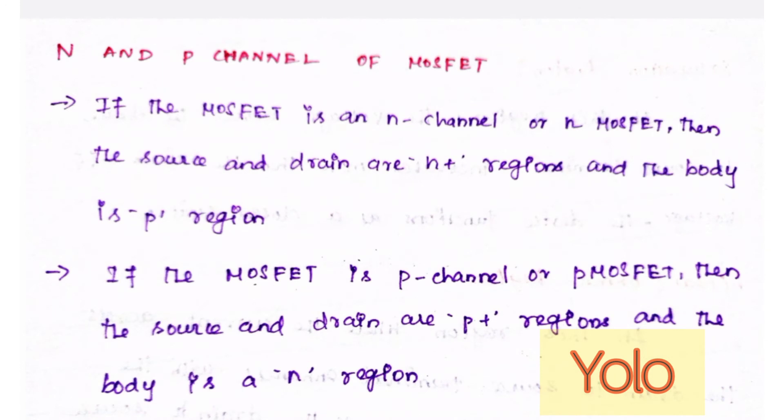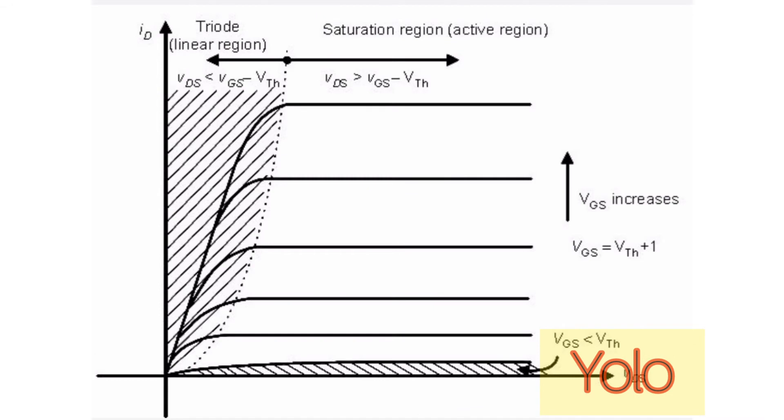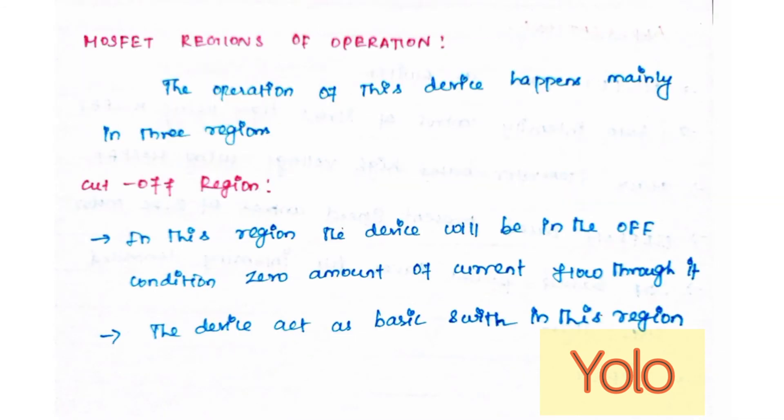N and P channel MOSFET: If the MOSFET is an n-channel or n-MOSFET, then the source and drain are n-plus regions and the body is p-region. If the MOSFET is p-channel or p-MOSFET, then the source and drain are p-plus regions and the body is an n-region.